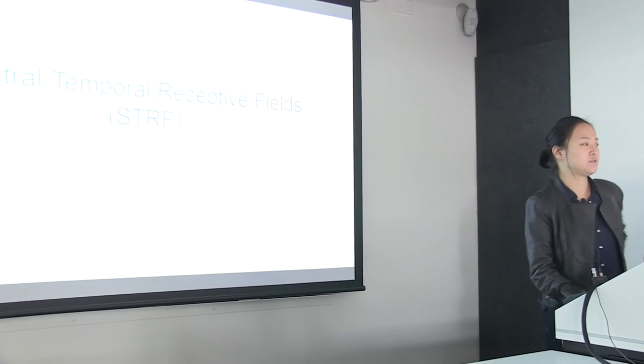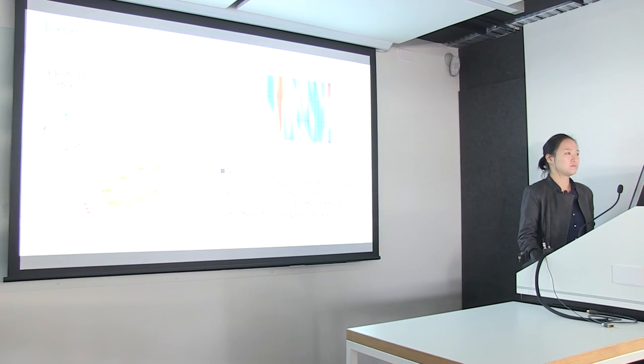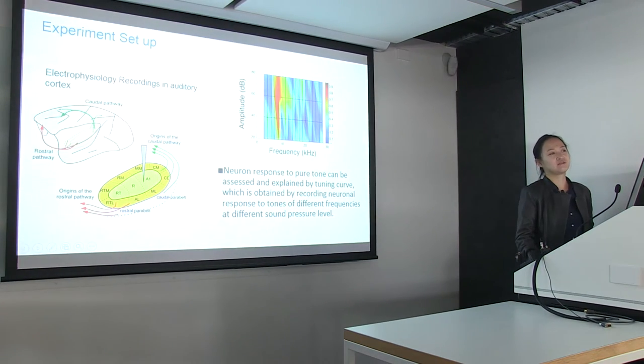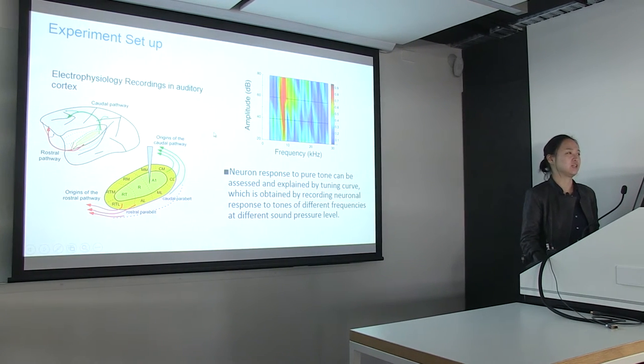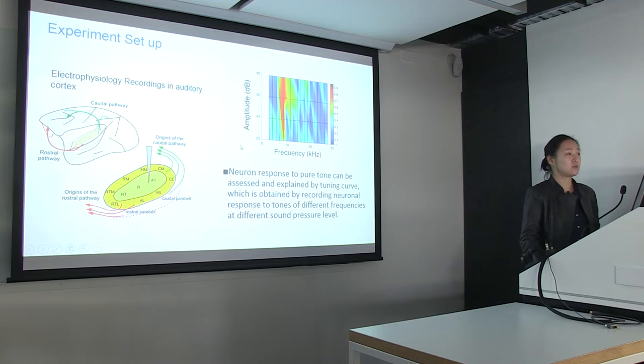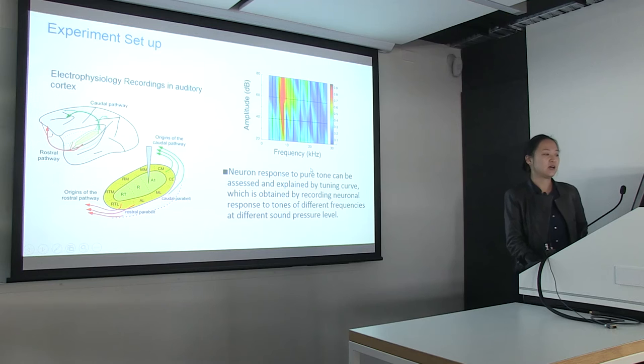Hi, so I'm going to talk to you about something called spectrotemporal receptive field today. We are doing a more invasive kind of research, so we stick the electrode into the brain and we measure the voltage changes. So traditionally in auditory neuroscience, neural response to pure tones can be assessed and explained by this frequency intensity matrix, which is also called the tuning curve.